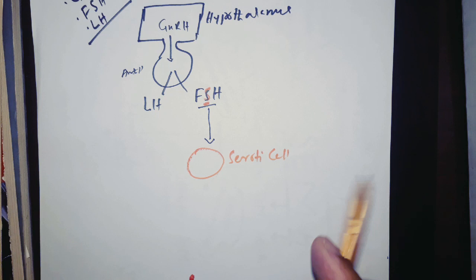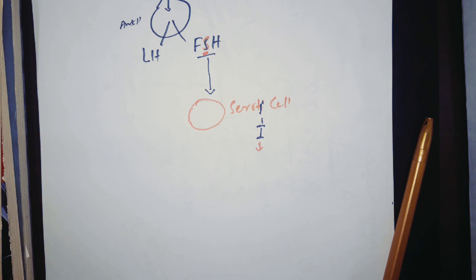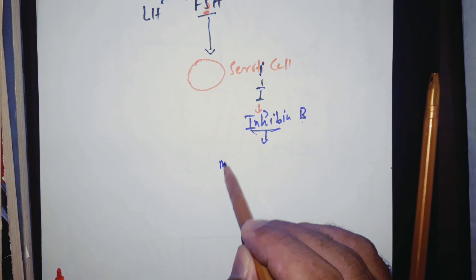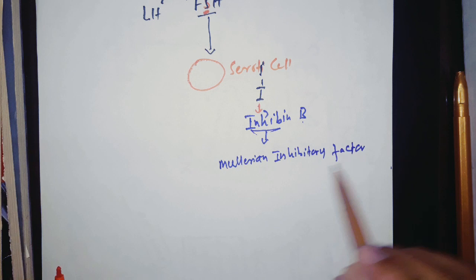Sertoli cells secrete inhibin B. Now from this inhibin we can also remember that Sertoli cells secrete Mullerian inhibitory factor, which can also be called MIS or MIF.